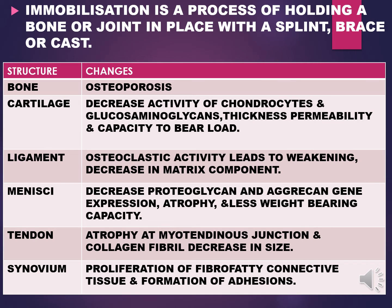Similarly, menisci — most importantly the medial and lateral menisci of the knee — also help support the joint in movement. The key component in menisci is proteoglycans, which decrease during immobilization. Proteoglycan is the major component of the extracellular matrix, acting as a filler substance between cells, a water binder, and providing a basis for absorbing high compressive loads. For tendons, atrophy occurs due to a decrease in the size of collagen fibrils. The synovium within the joint is also affected; increased proliferation of fibroblastic connective tissue ultimately leads to formation of adhesions.